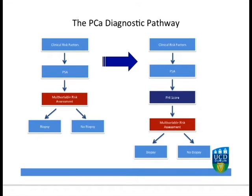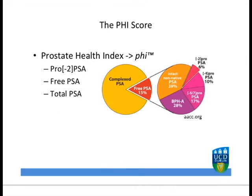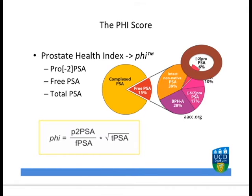One such method is to improve upon our current biomarkers, namely PSA, through the use of the Prostate Health Index score. In this way we can look to improve our risk stratification and hence improve our patient selection for biopsy. The Prostate Health Index is essentially a biomarker panel consisting of pro-PSA, free PSA and total PSA. The novel component of the PHI score is pro-PSA, which is an isoform of free PSA and has been demonstrated to be preferentially expressed in malignant prostate tissue. The PHI score is then calculated as per the formula shown at the bottom of this slide.